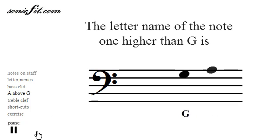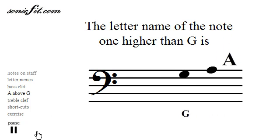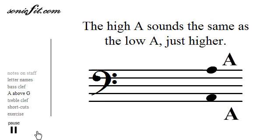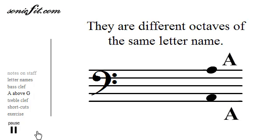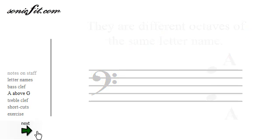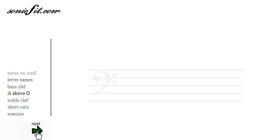To go one note higher than G, we don't go to H — instead we go to A, because it's the same note as the A below. These are called different octaves of the same note.